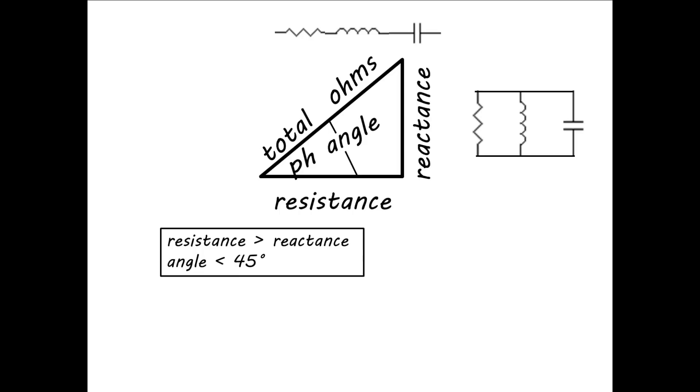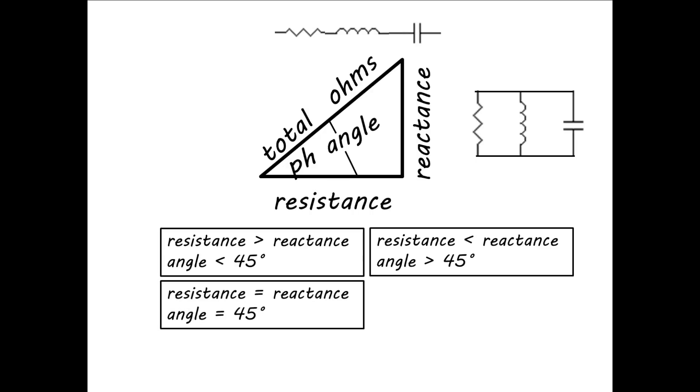The rules are: if the resistance is larger than the reactance, then the phase angle is going to be less than 45 degrees. If the resistance is less than the reactance, the phase angle is going to be greater than 45 degrees. If resistance and reactance are the same, the angle is going to be exactly 45 degrees.